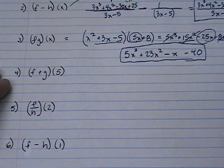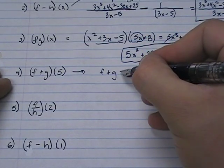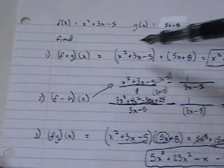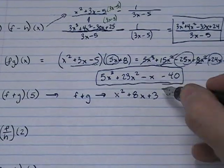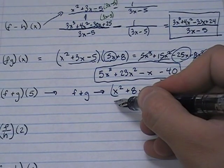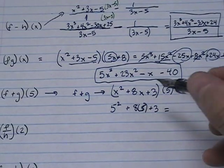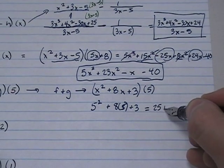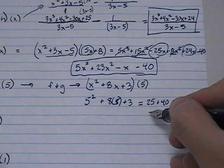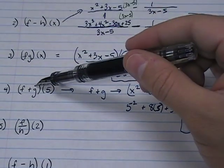Problem number four, they've asked us to find f plus g of 5. I know that f plus g was x squared plus 8x plus 3. I did that earlier. So I copy that answer and they want me to find that of 5. Everywhere you have x, you put a 5. So really what I need to do is 5 squared plus 8 times 5 plus 3. 5 squared is 25, and 8 times 5 is 40, and then 3. 25 plus 40 plus 3 gives me 68.